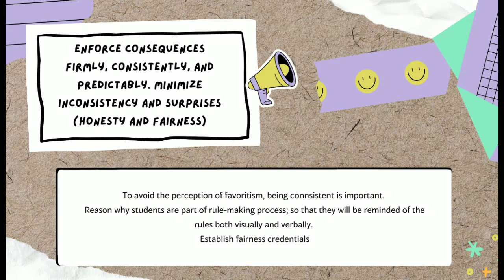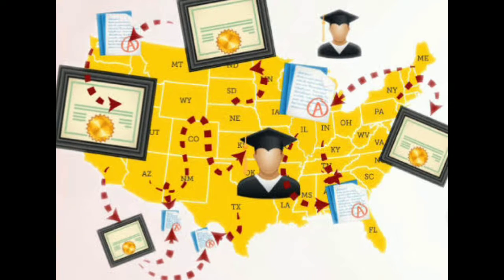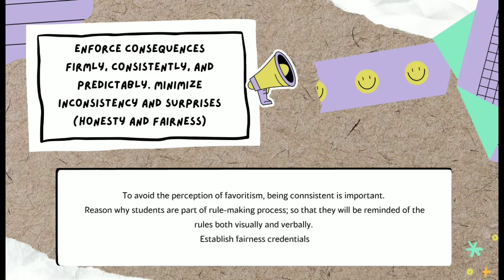Fourth is honesty and fairness. Teachers should enforce firmly, consistently, and predictably, and should minimize inconsistency and surprises. Students are keenly aware and sensitive to fairness, especially when it comes to authority figures like teachers. Being firm but fair establishes the importance of the rule or process, eliminates the perception of favoritism, lowers student doubt, and establishes your fairness credentials as a teacher and as a professional. Students won't be surprised when we enforce rules because they are constantly reminded of them, were part of the rulemaking process, and are aware of the consequences of rule infractions.